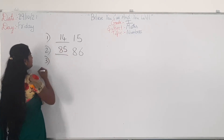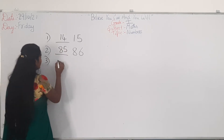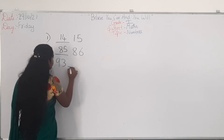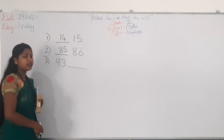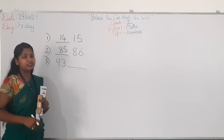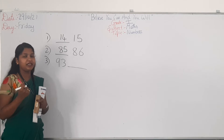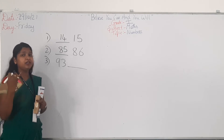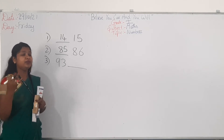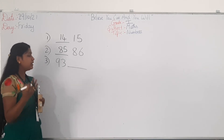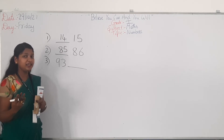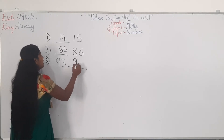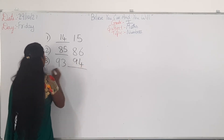Next, we will see the after number. Take 93 — which is the number coming after 93? Count from 90: 91, 92, 93, 94. So, which is the number after 93? It is 94.